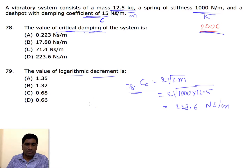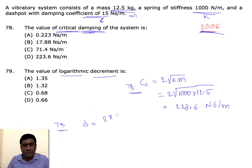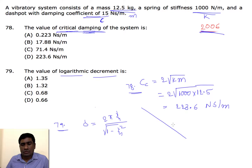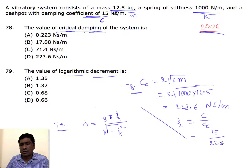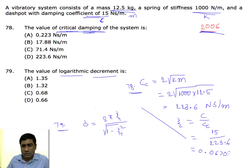The next part asks for the logarithmic decrement. The formula is δ = 2πξ / √(1 − ξ²). We need to find ξ, where ξ = c / cc. The value of c is 15, divided by 223.6, giving ξ = 0.06708.